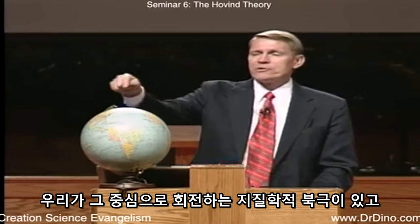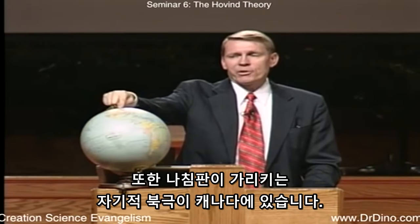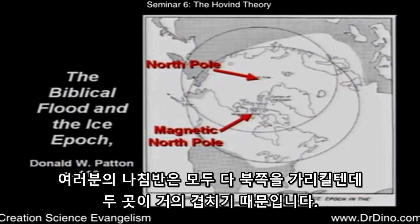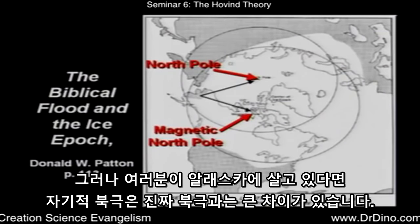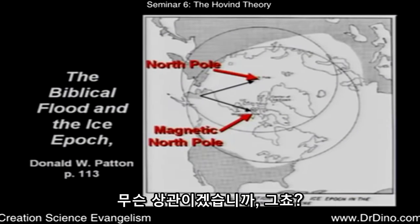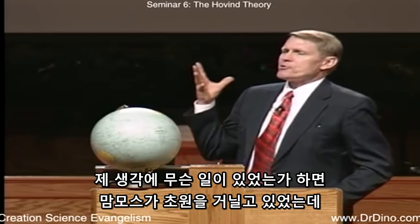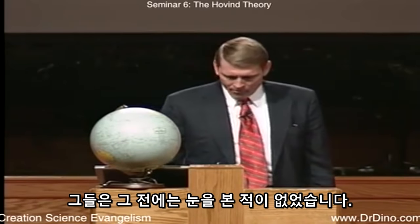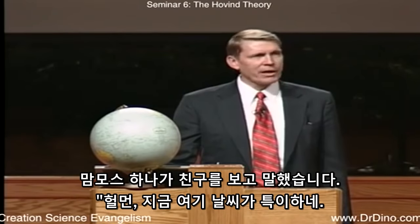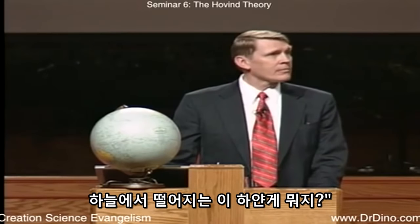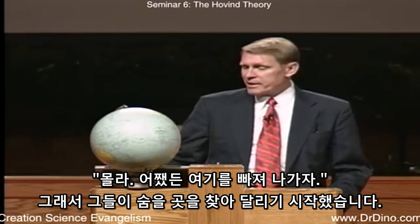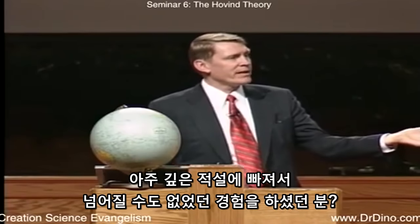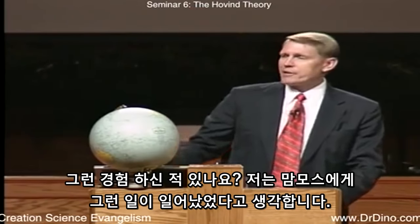The earth actually has two North Poles: the geographic North Pole where we spin around, and the magnetic North Pole in Canada where the compass actually points. I think what happened is the mammoths were up there chomping on tropical flowers on a beautiful day when it began to snow — super-cold snow. They had never seen snow before. They looked at each other and said, 'This is peculiar weather — what is this white stuff falling from the sky?' They started running around trying to find a place to hide. The snow got deeper and deeper and they got stuck standing up and couldn't even fall down.